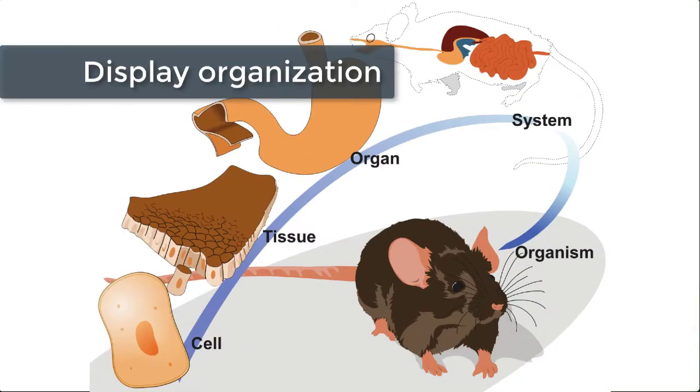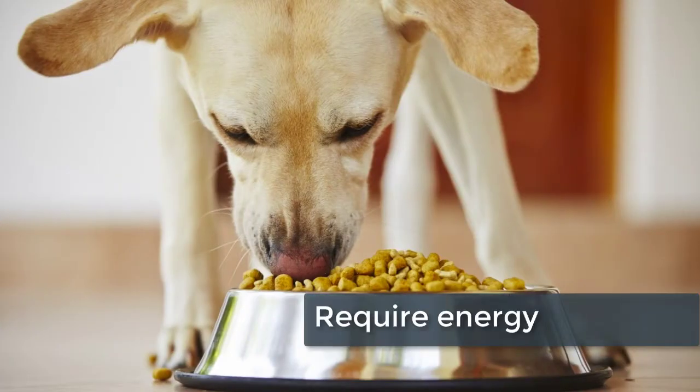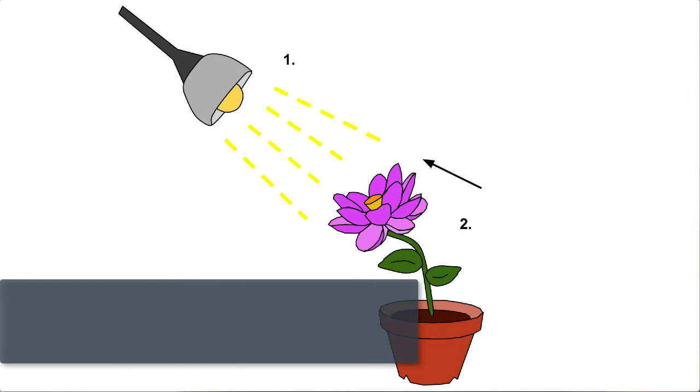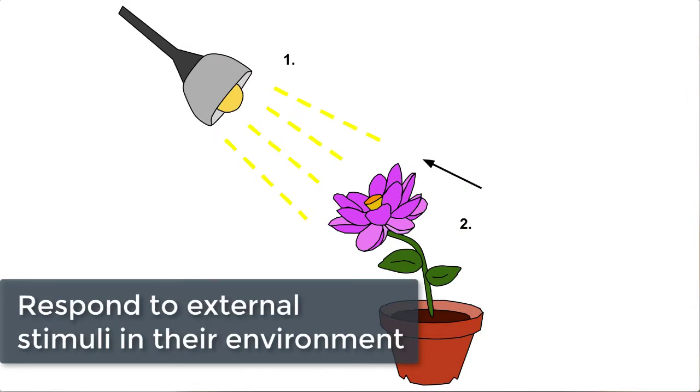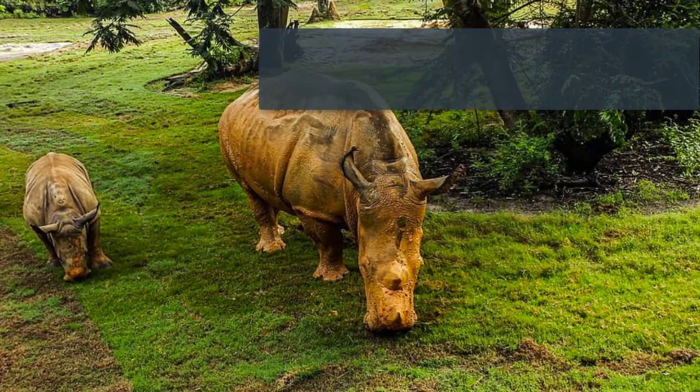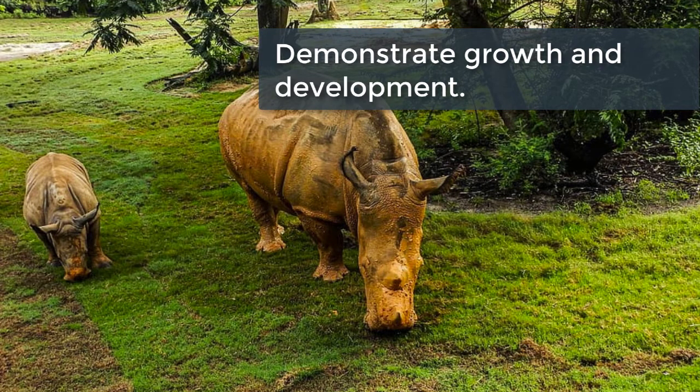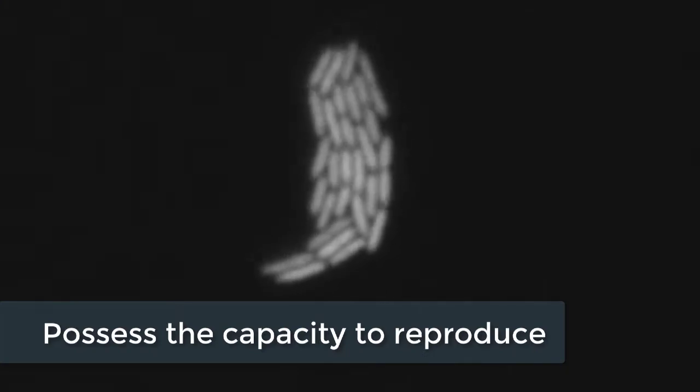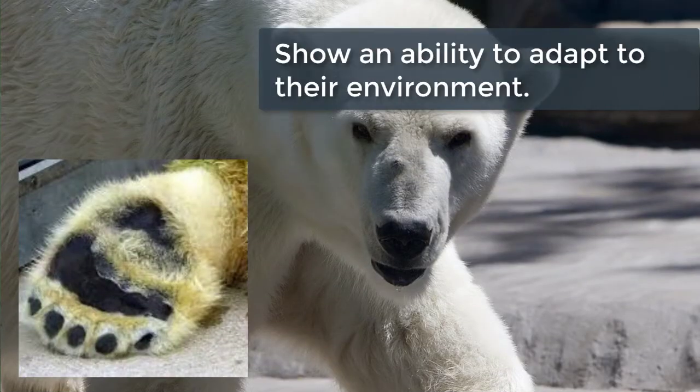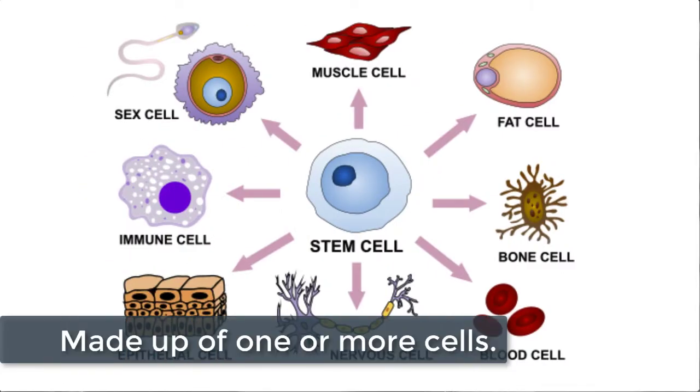But I can give you some characteristics that we can generally associate with something being defined as a living thing. The first thing is that living things have to display some form of organization. The components or structures that make them up have to have or should have specific functions. Another requirement is they have to require some form of energy. They should show evidence that they respond to stimuli in their environment, meaning I'm going to move toward or maybe away from this source of light. Living organisms should demonstrate growth and development. They should show the capacity to reproduce, they should show an ability to adapt or change in response to their environment, and they should be made up of one or more cells.